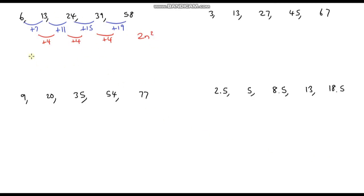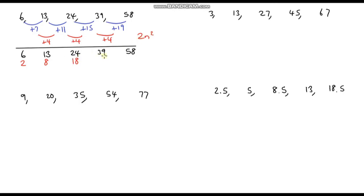I'm just going to write down the sequence again and now write down the sequence 2n squared. 1 squared is 1, times 2 is 2. 2 squared is 4, times 2 is 8. 3 squared is 9, times 2 is 18. 4 squared is 16, times 2 is 32. And 5 squared is 25, times 2 is 50. Just be careful here because you need to apply BIDMAS correctly — we do the squaring before we multiply by 2.